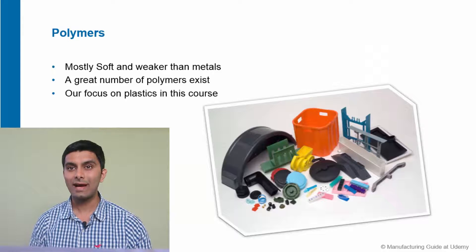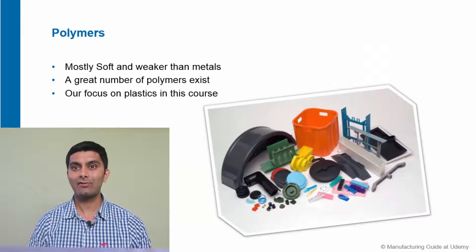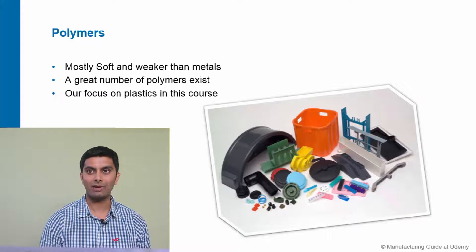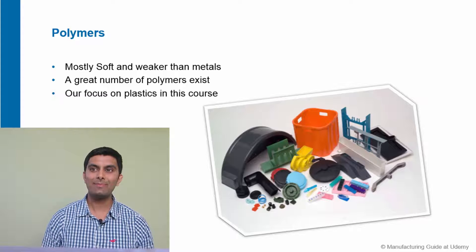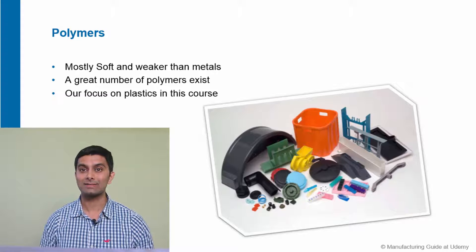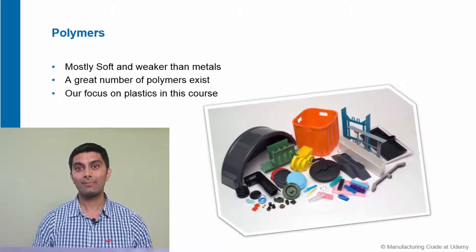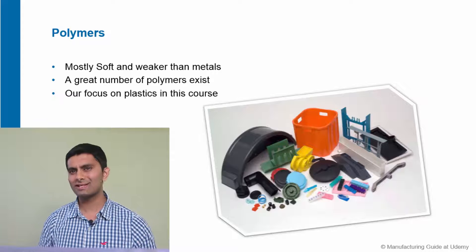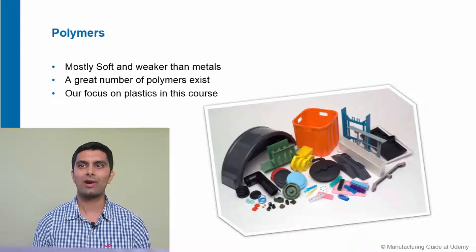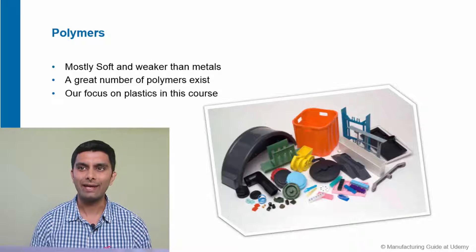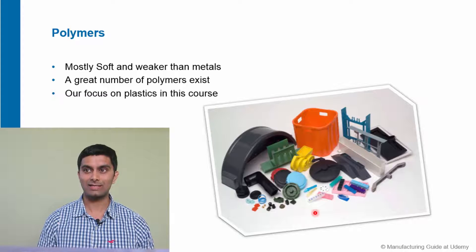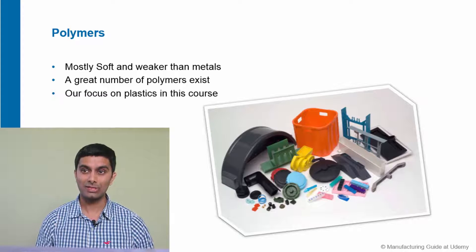Polymers are mostly soft and not as strong as metals in their primary form, but they can be made much stronger using chemical processes. Plastics is just one type of polymers and we use plastic products every day. You can see some plastic products in this picture.